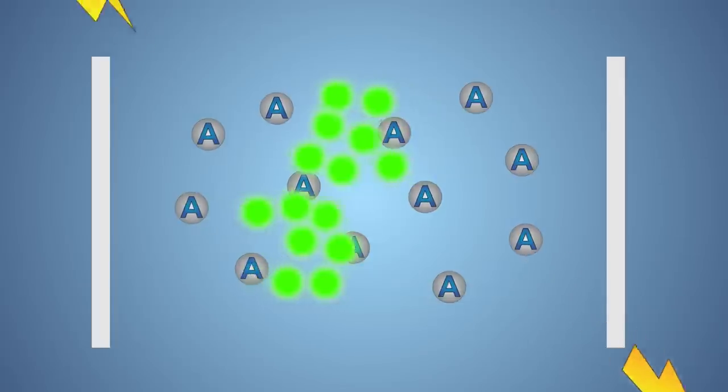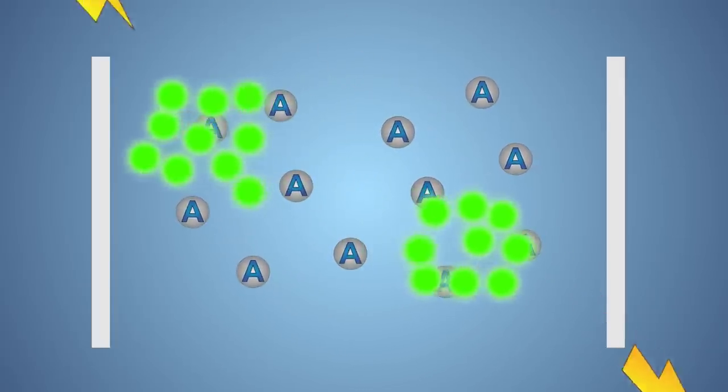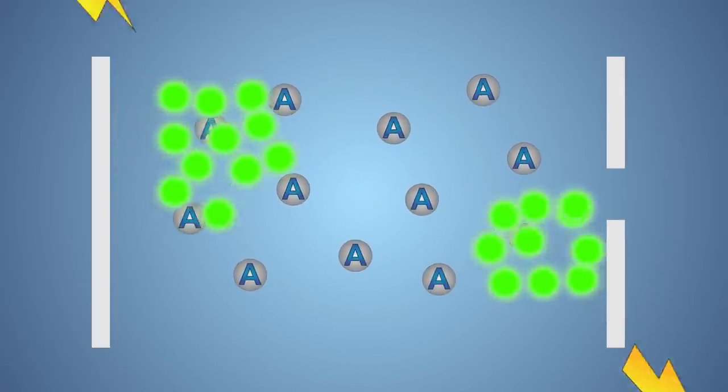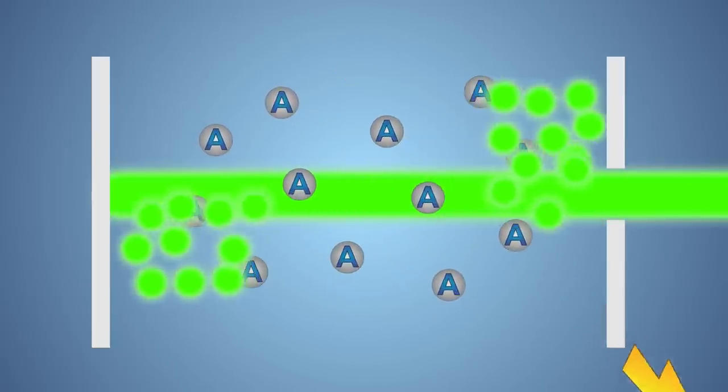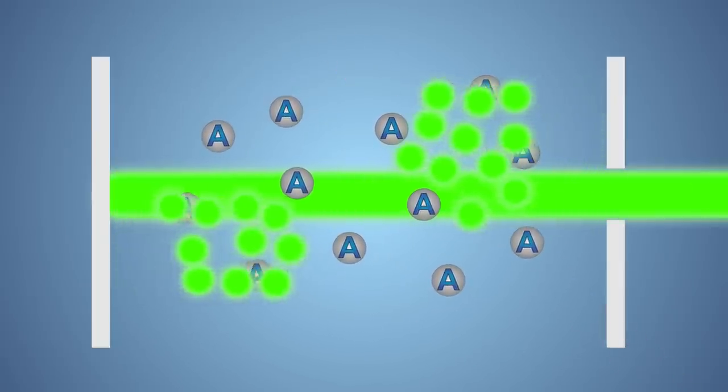This reaction will happen over and over until we have tons of light stored up. If we open up a little hole in our laser, we let out the collection of light as an intense coherent beam. This is known as a laser beam.